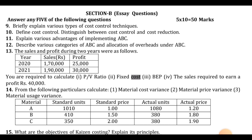Question thirteen: the sales and profits during two years were as follows. You are required to calculate: first, the P/V ratio; second, fixed cost; third, BEP (break-even point); and fourth, the sales required to earn a profit of rupees 40,000.